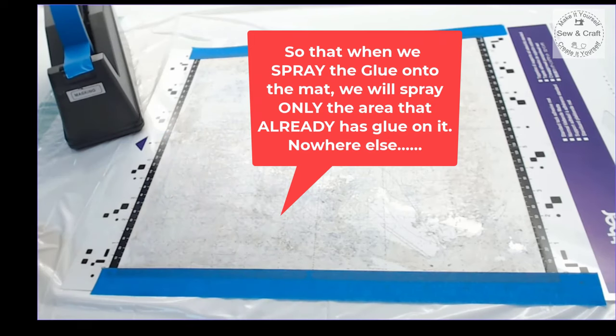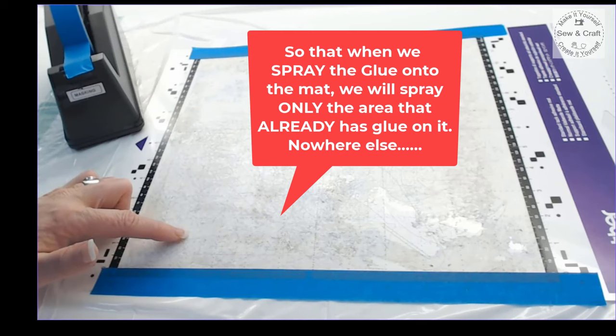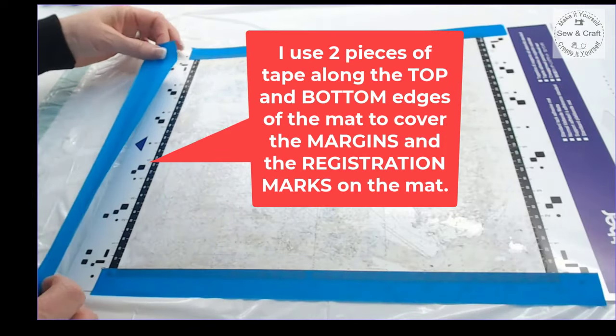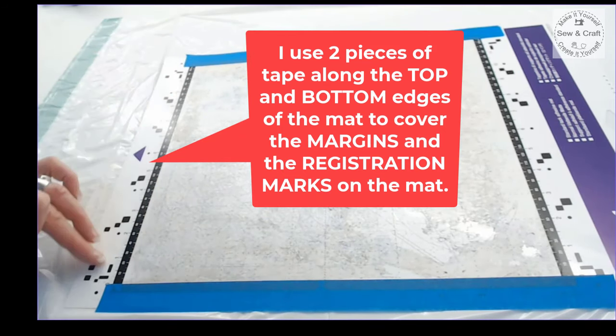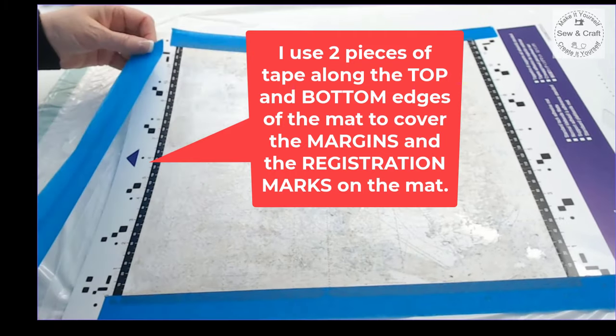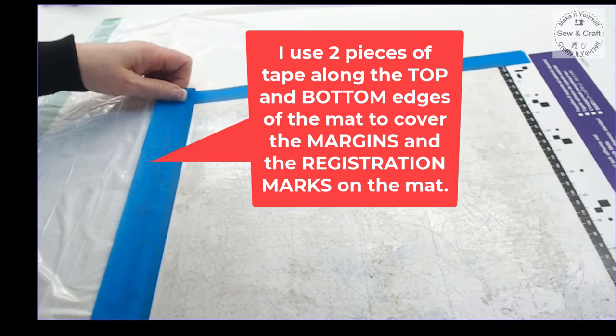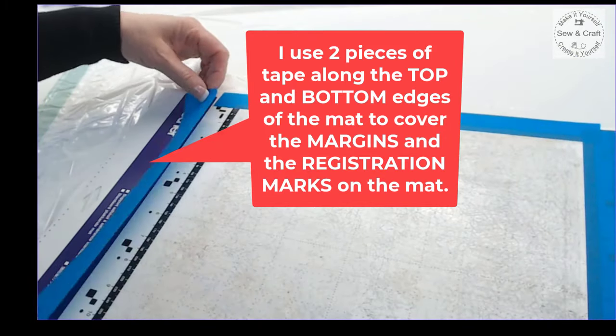I like to use two pieces of tape along the top and bottom edges of the mat to cover the margins as well as those registration marks that are on the mat because we don't want to get any glue onto any part of the mat that the machine is going to read.